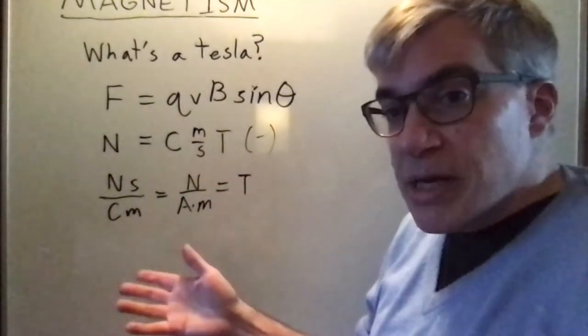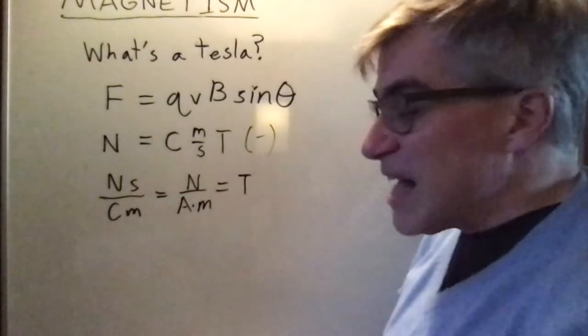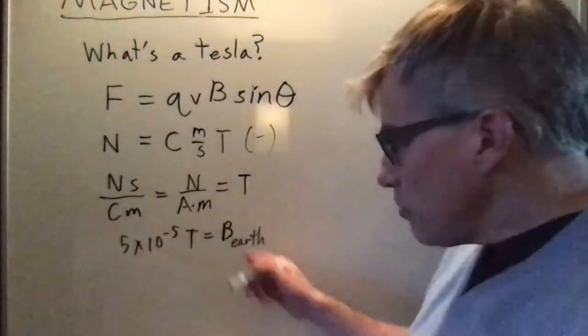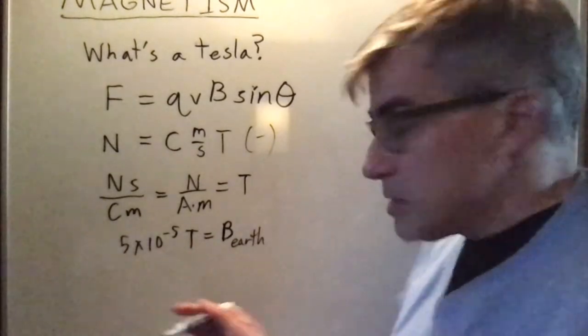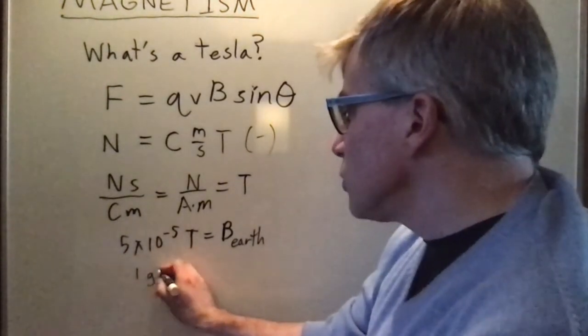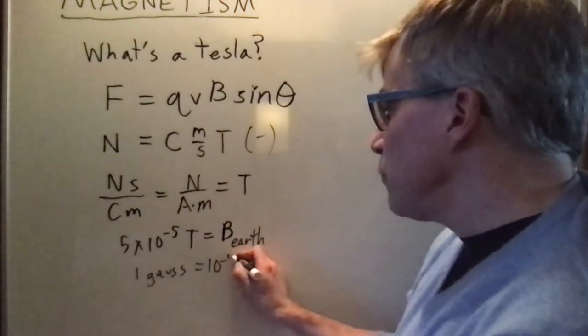The Earth's magnetic field is only about five times ten to the minus five Teslas. Since that's so small we actually have a smaller unit. One Gauss is ten to the negative four Teslas.